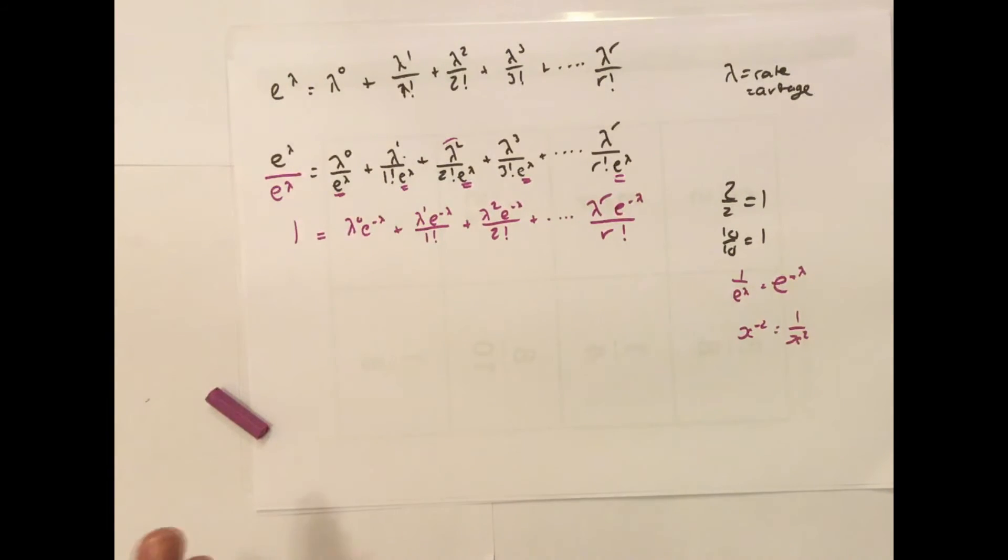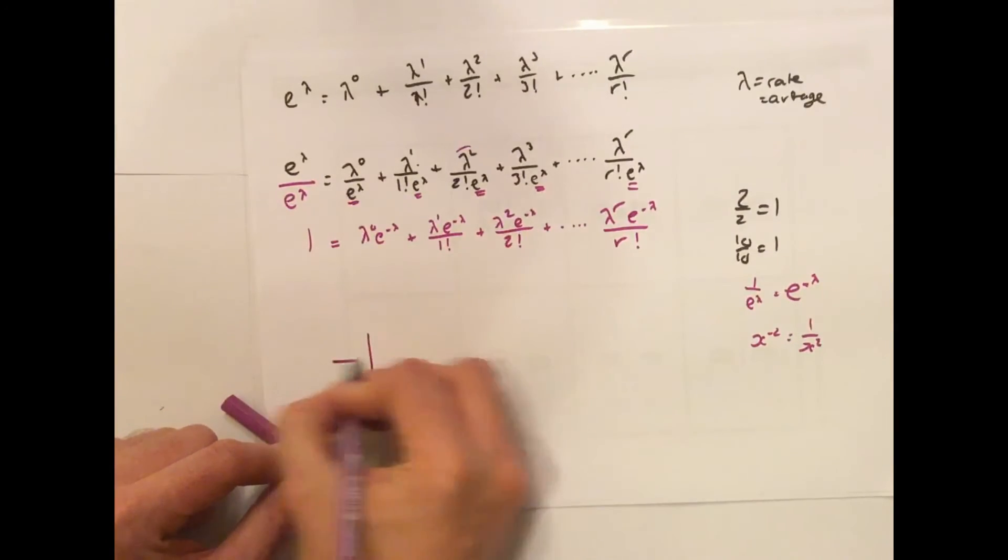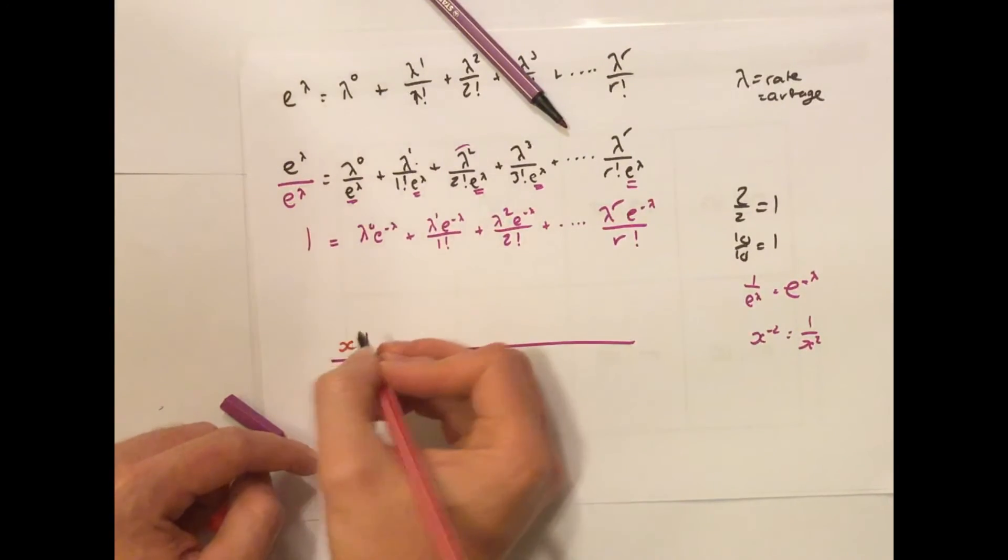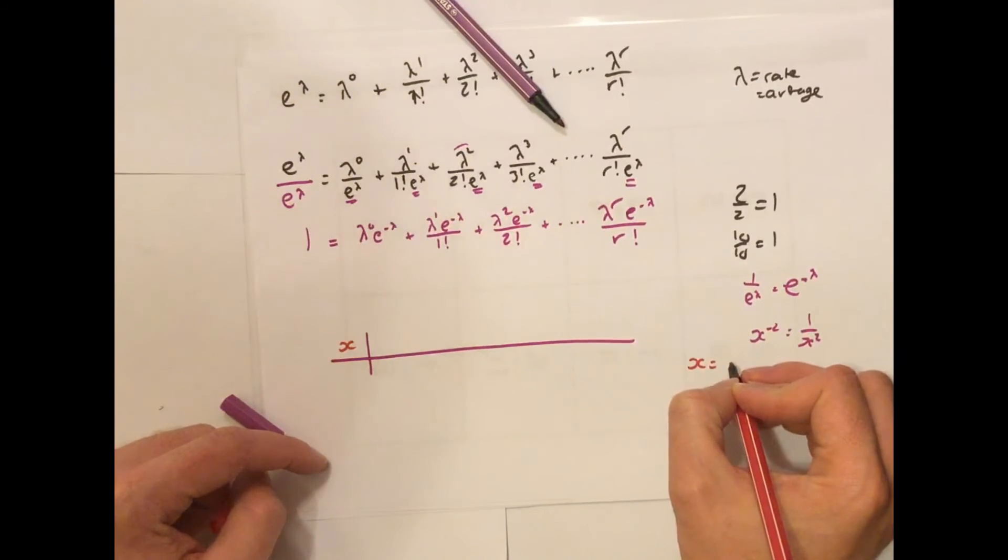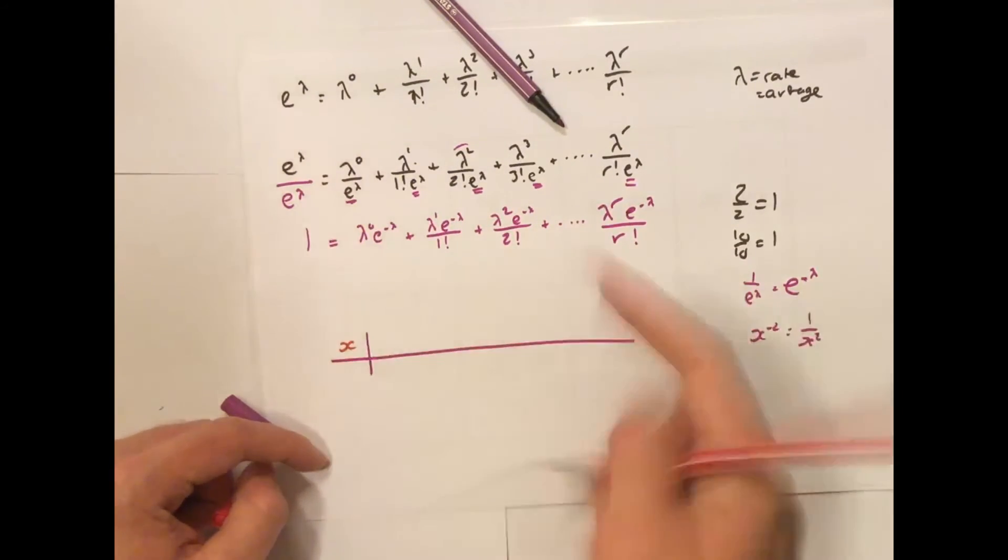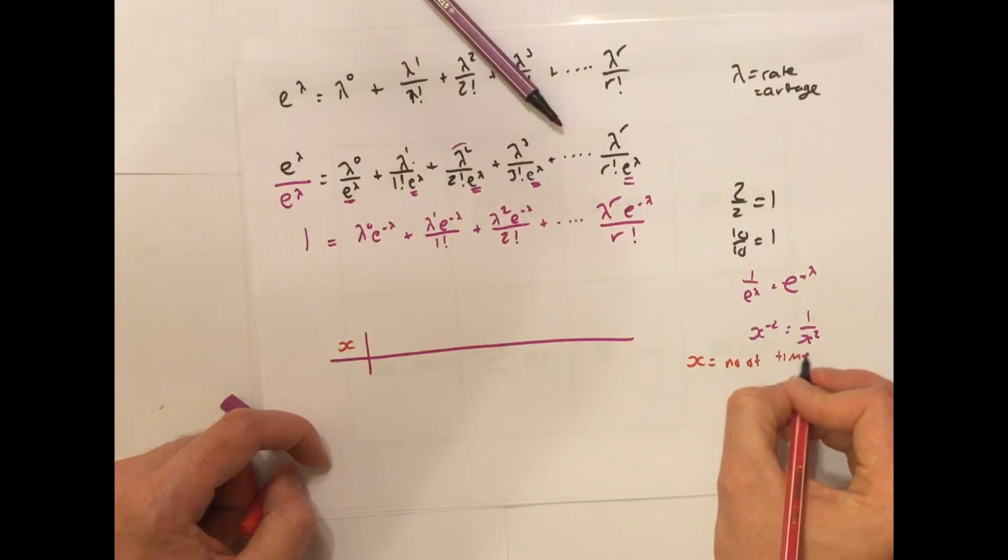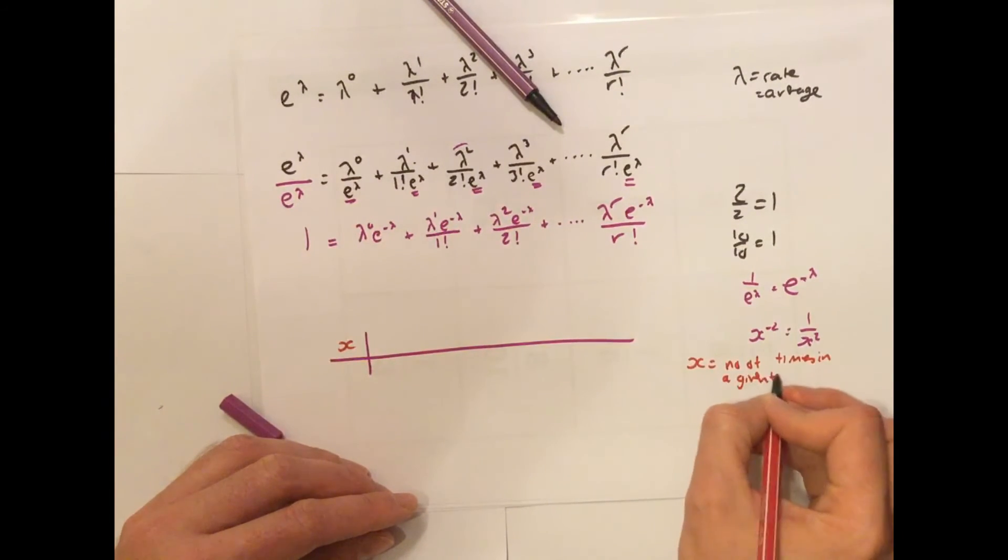OK, so you're thinking, what the heck is that? How on earth do you even start to use that thing? Well, here we go. Let's take it in a table. Our table is going to look like this. So, here's our x. Let's define it as the number of occurrences that an event occurs in a given time.